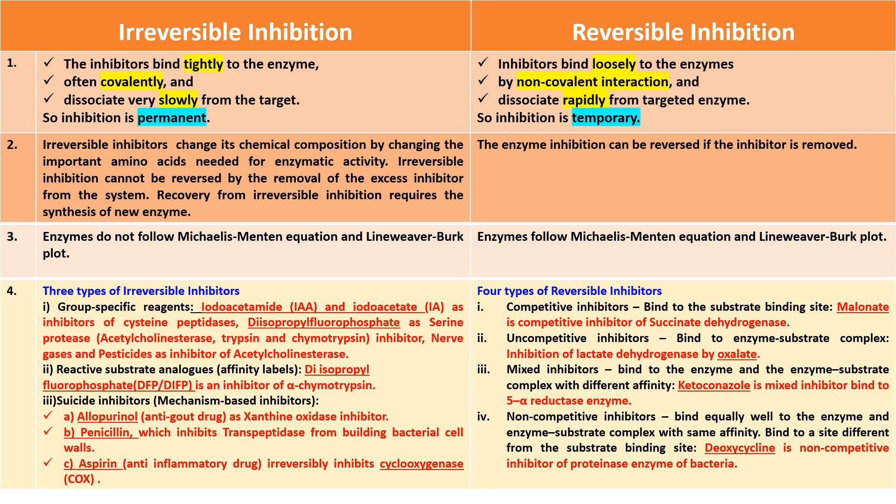Uncompetitive inhibitors bind to the enzyme-substrate complex. Inhibition of lactate dehydrogenase by oxalate is an example of uncompetitive inhibition. Mixed inhibitors bind to both the enzyme and the enzyme-substrate complex with different affinity. An example is ketoconazole, which is a mixed inhibitor of the 5-alpha-reductase enzyme.